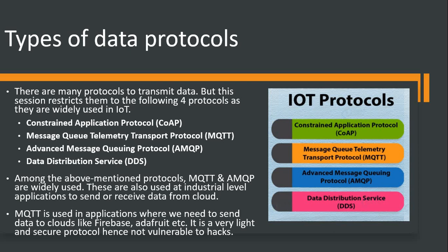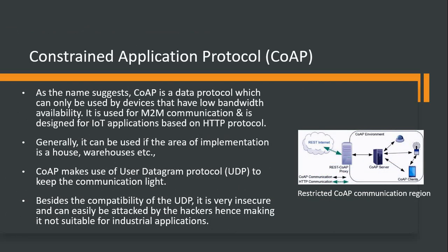CoAP, MQTT, AMQP, DDS — MQTT and AMQP are the most commonly used at the industry level. The Constrained Application Protocol — the name itself says that it is constrained. CoAP is a data protocol but can be used with devices that have very low bandwidth availability. It is used mostly in machine-to-machine communication and is designed specifically for IoT applications based on HTTP. It can be implemented for small-scale applications like homes and warehouses.